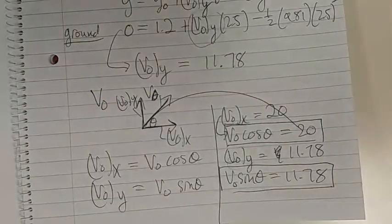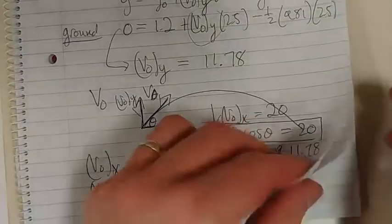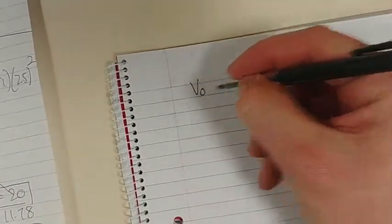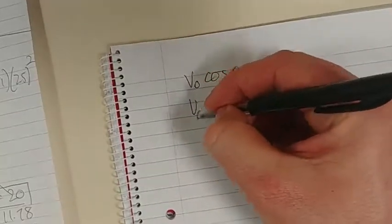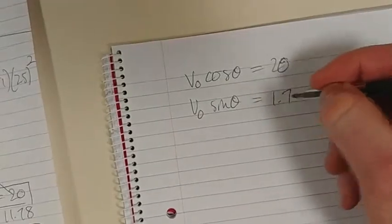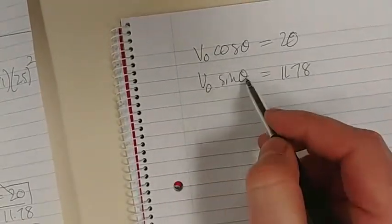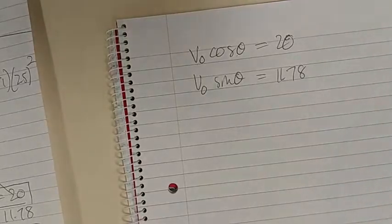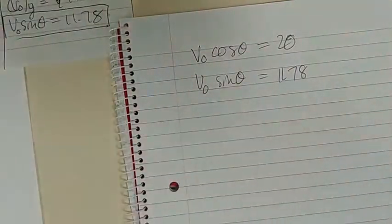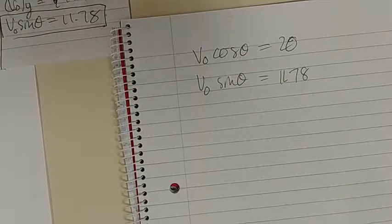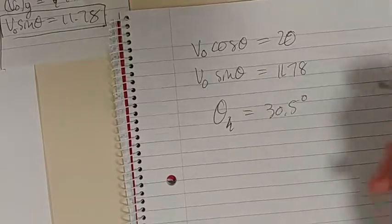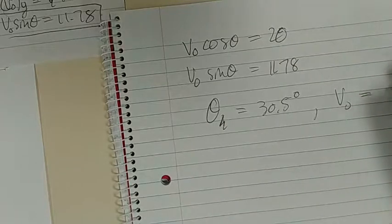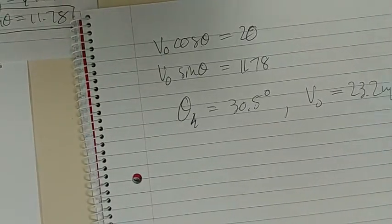So I hope you're still with me. V0 cos theta is 20, and V0 sin theta is 11.78. So we've got two unknowns and two equations. If you go and solve that, that's pretty straightforward to solve. You should get theta equals 30.5 degrees, and my original velocity is 23.2 meters per second.